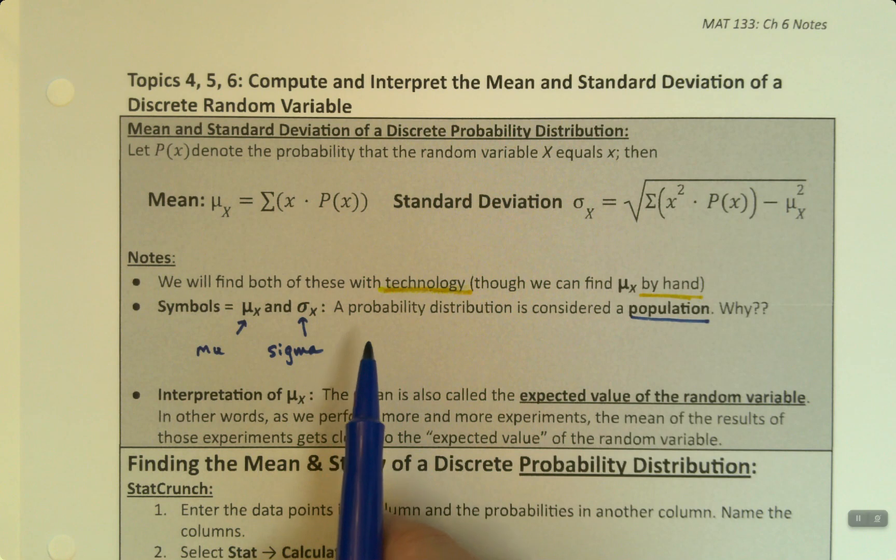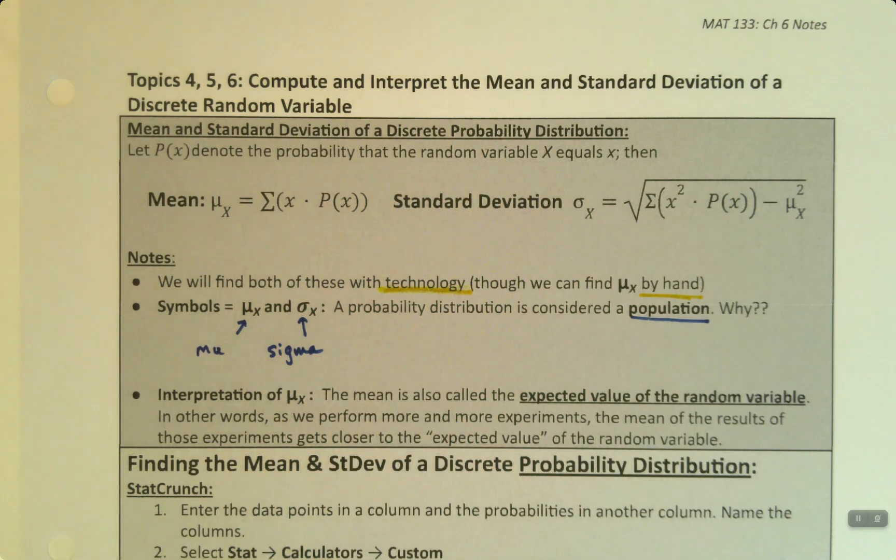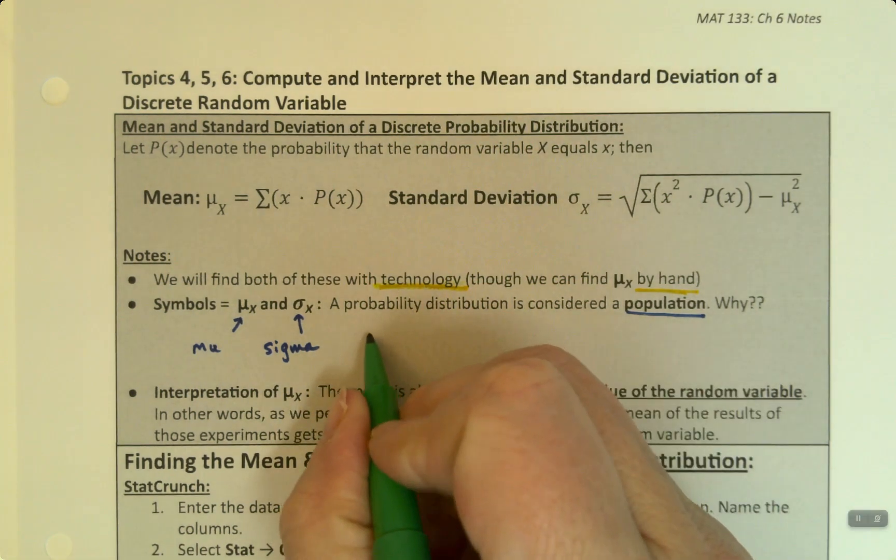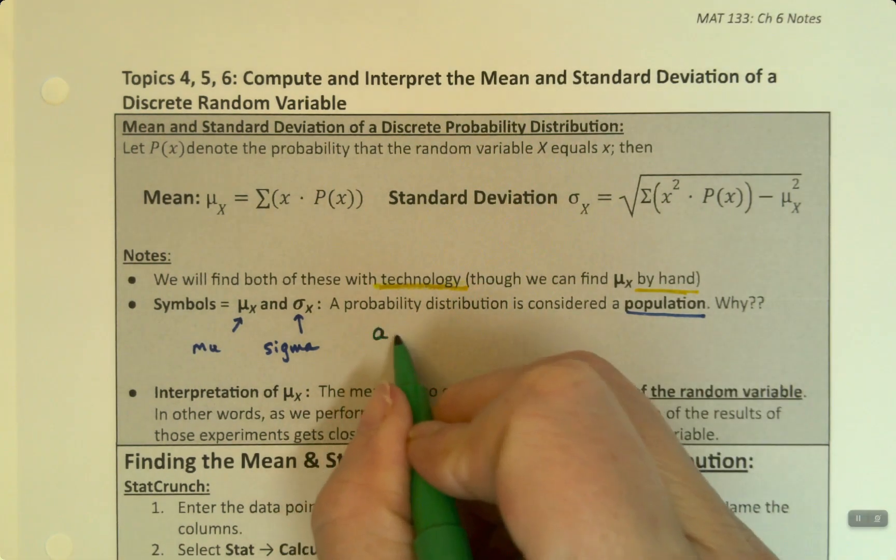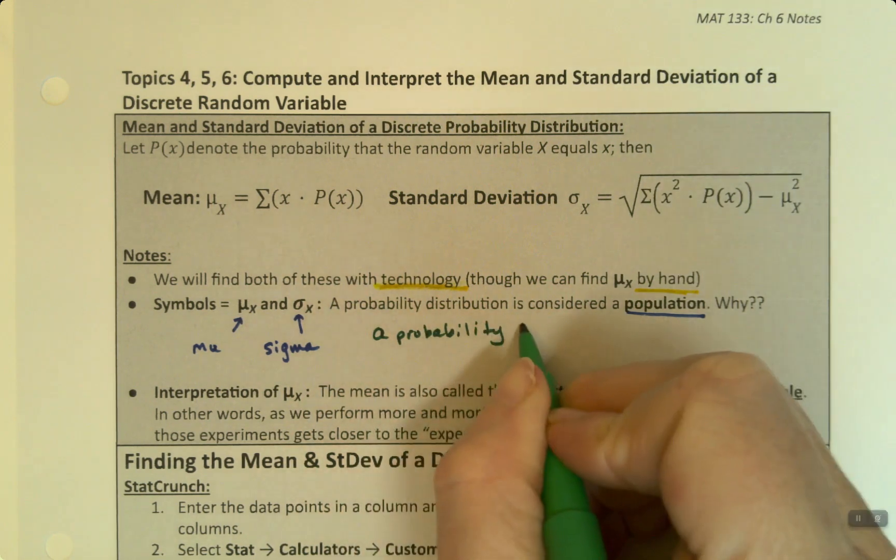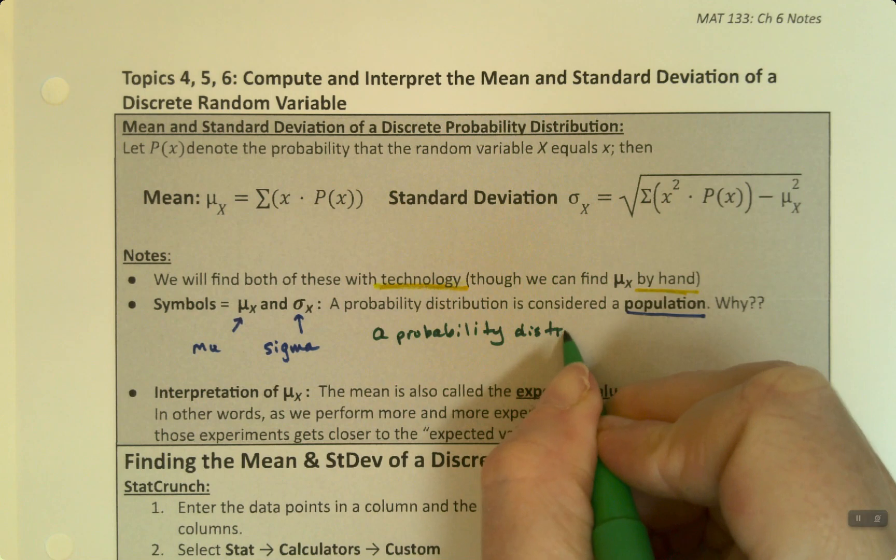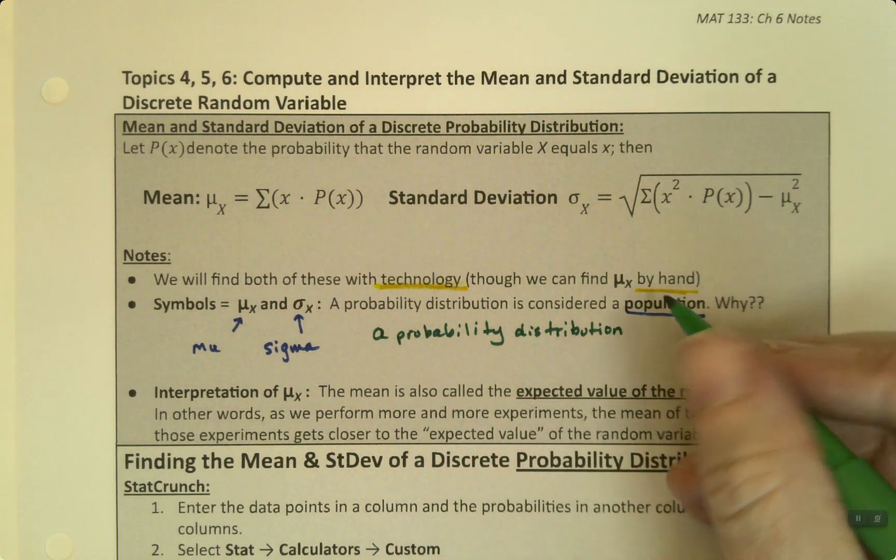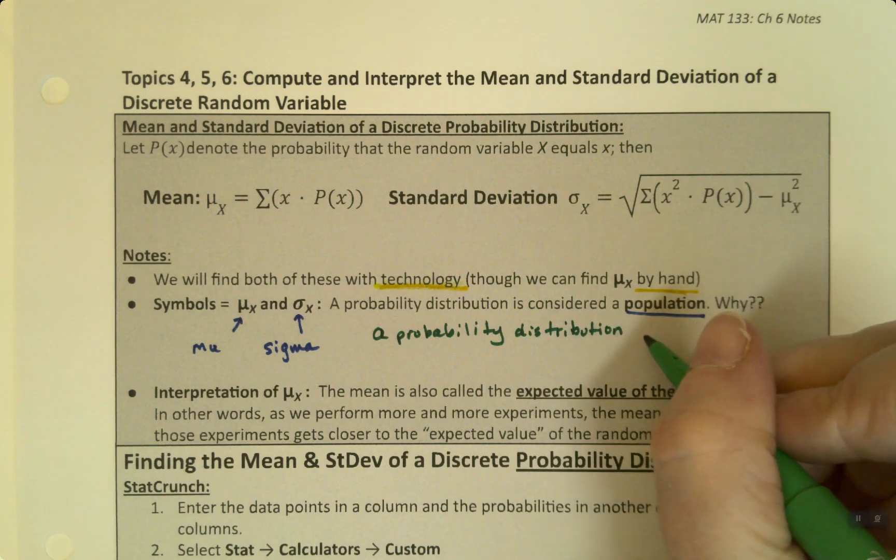Now, why can we use a probability distribution, or why can we use population symbols for a probability distribution? That's because a probability distribution represents all possible futures. So it is a population. A probability distribution is the future. When you look at a probability distribution, you're looking at the future possible outcomes from this experiment, from this random experiment.